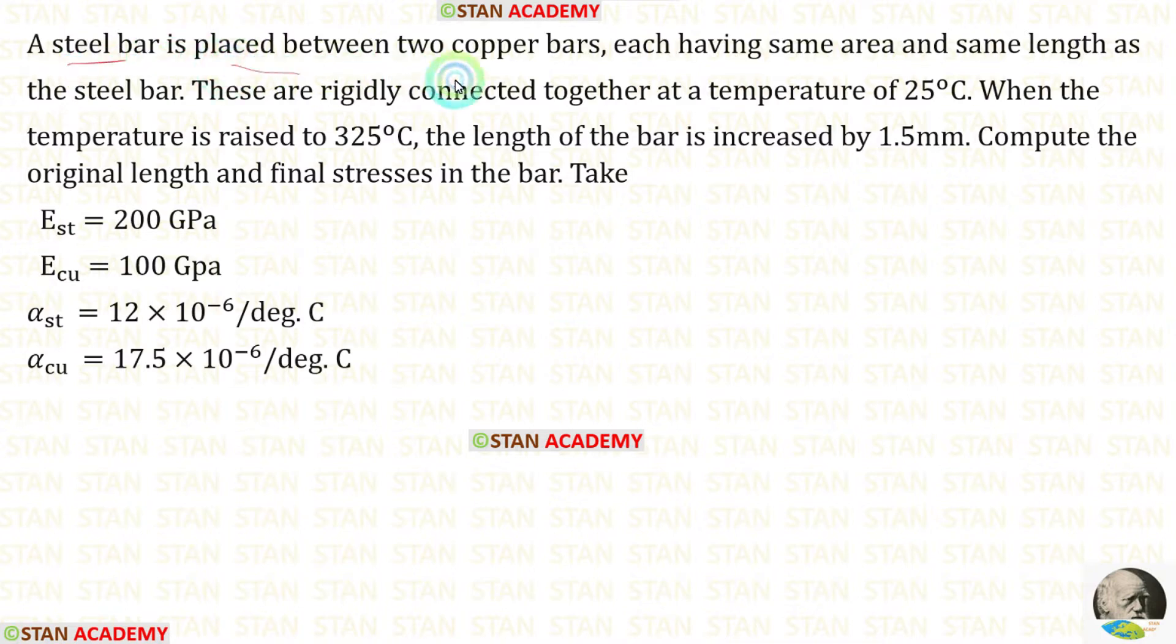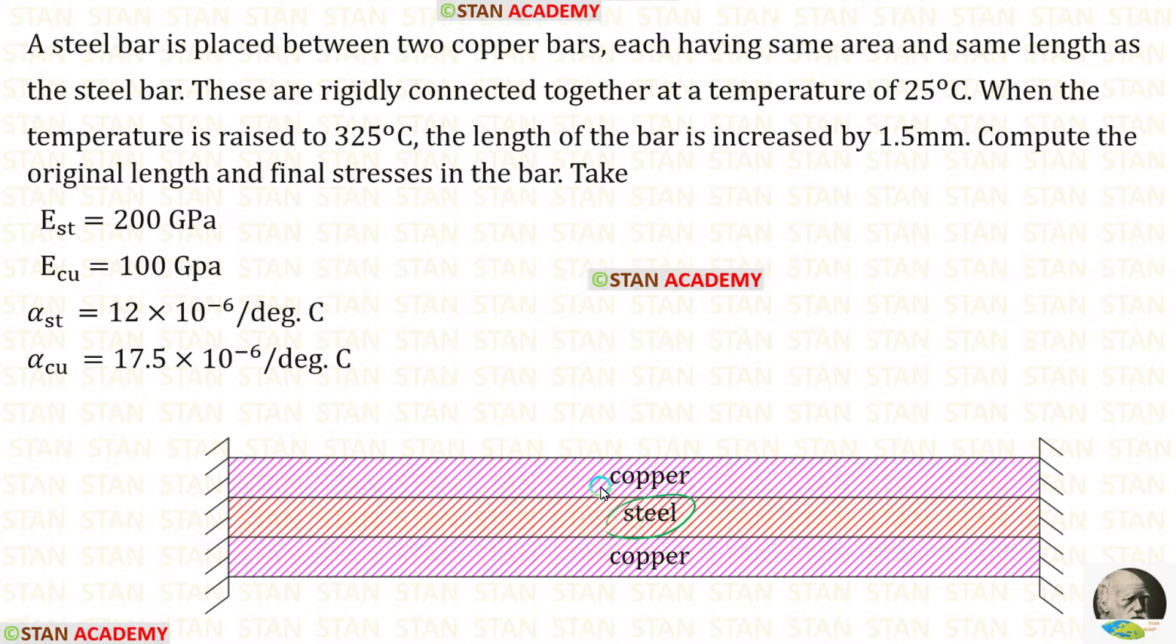A steel bar is placed between two copper bars, each having same area and same length as the steel bar. These copper bars have the same area and same length as the steel bar. These are rigidly connected together at a temperature of 25 degree Celsius. When the temperature is raised to 325 degree Celsius, the length of the bar is increased by 1.5 millimeter. We have to compute the original length and final stresses. The Young's modulus for steel and copper are given. The coefficient of linear thermal expansion for steel and copper are given.